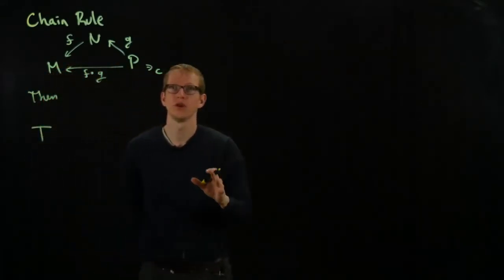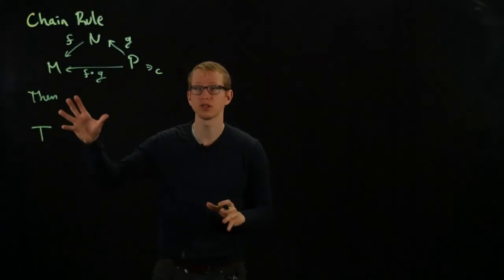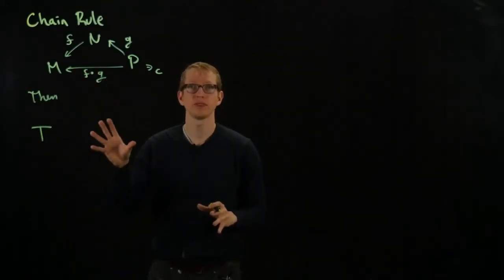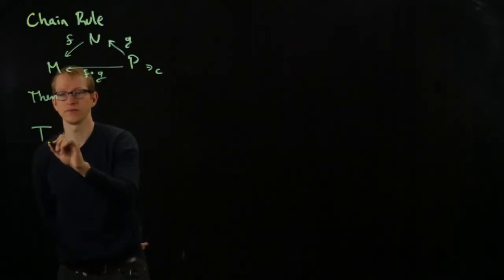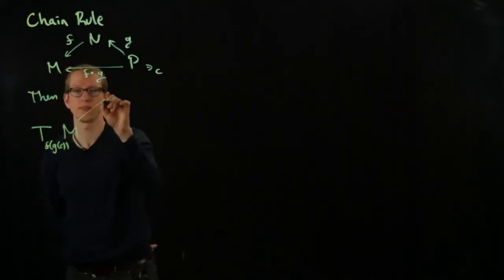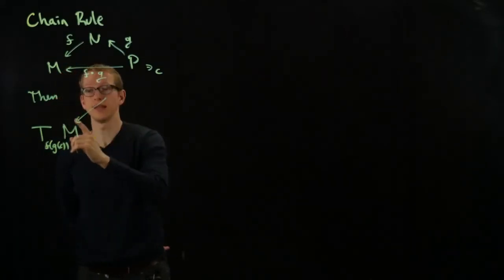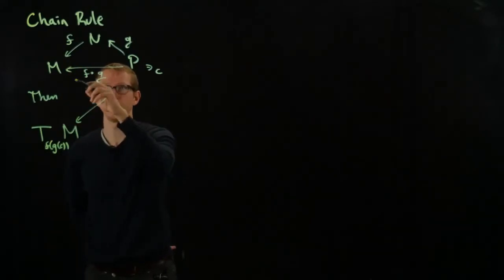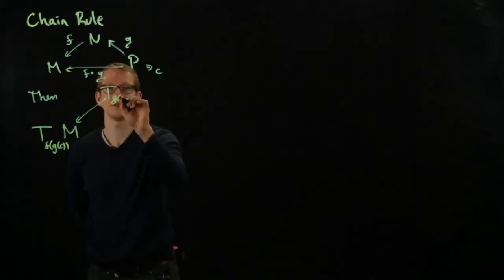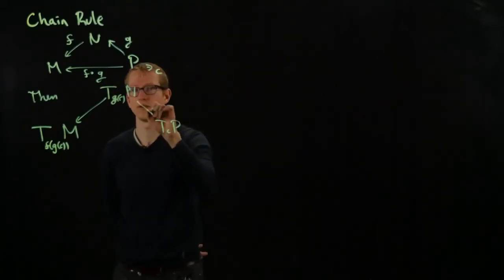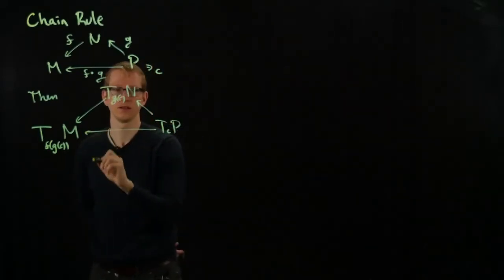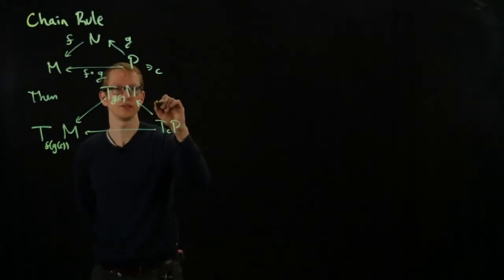then this diagram, where we have differentiable functions, goes to another diagram of vector spaces and linear transformations. Here we have F of G of C in M, that's an M-dimensional vector space if the dimension of M is M. We have G of C here for N, and T_C P for this vector space.